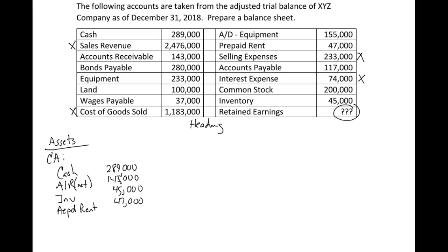Remember these current assets are listed in order of liquidity — meaning how quickly we're going to convert them into cash. We get our total current assets here and put that number over in a separate column where we add up all our totals.